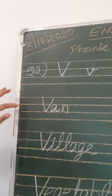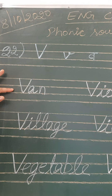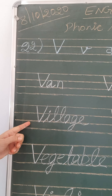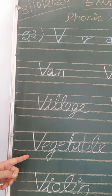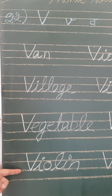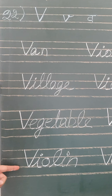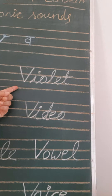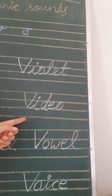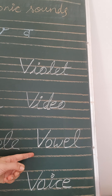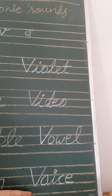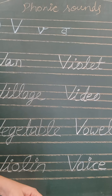Now recite it again. V is for van — wah, wah, van. V is for village — wah, wah, village. V is for vegetable — wah, wah, vegetable. V is for violin — wah, wah, violin. V is for video — wah, wah, video. V is for violet — wah, wah, violet. V is for voice — wah, wah, voice.